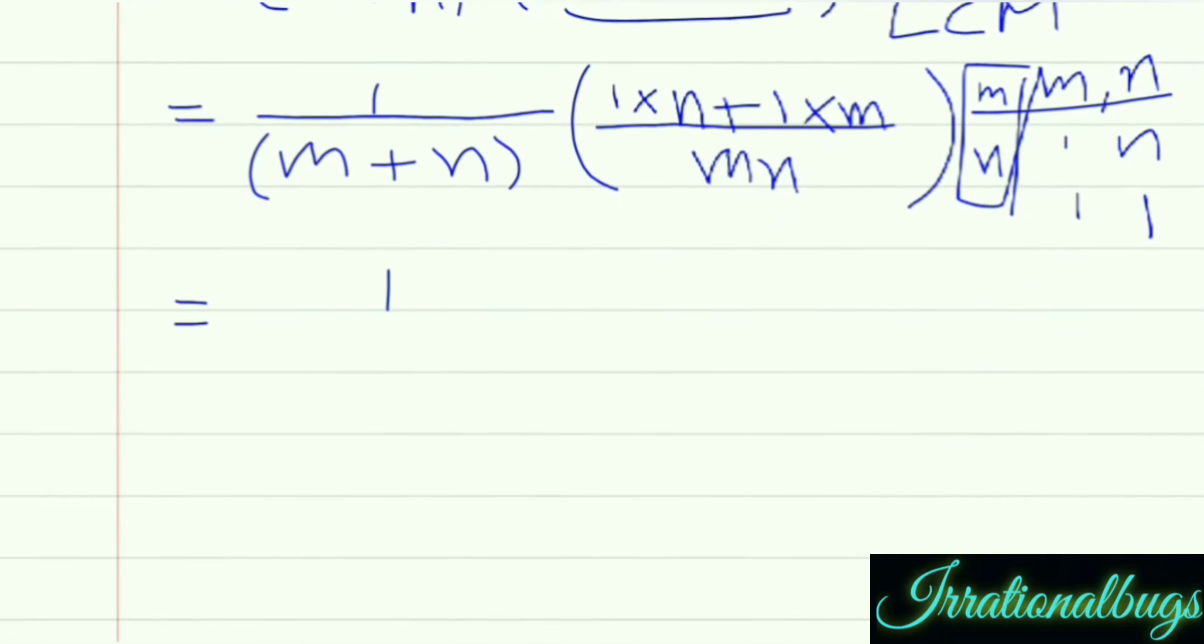Now we have 1 upon m plus n within bracket n plus m upon mn.